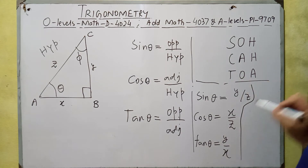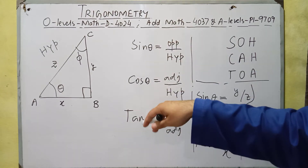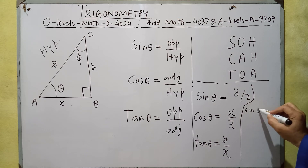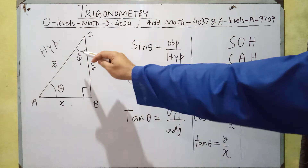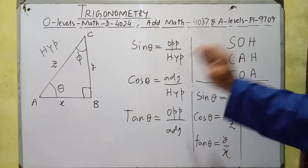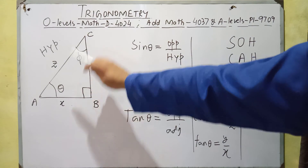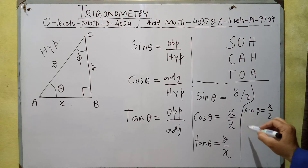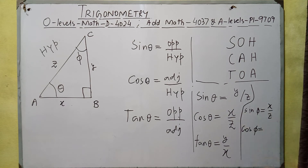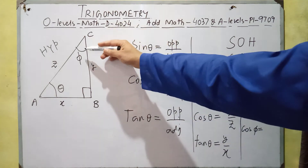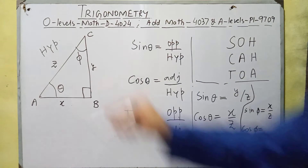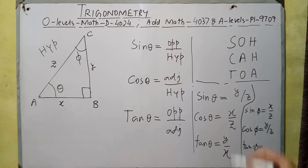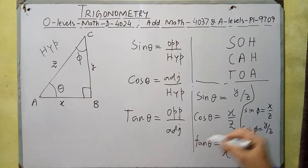If we talk about the trigonometric ratios with respect to angle phi, we get different values. Sin phi equals opposite over hypotenuse, and the side opposite to phi is X, so sin phi equals X over Z. Cos phi equals adjacent over hypotenuse; the adjacent side to phi is Y, so cos phi equals Y over Z. And tangent phi equals opposite over adjacent, which is X over Y.